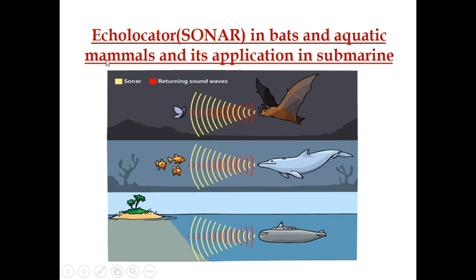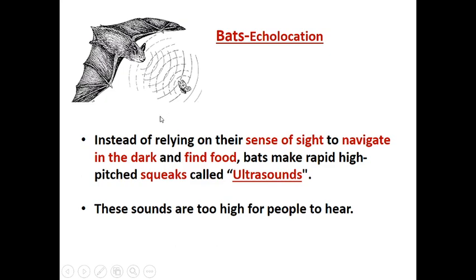In this echolocation concept, you can see a bat identifying a small mosquito not only by sight but through wave patterns. Aquatic fish also detect small fishes, either as food or through communication, via sound waves. The realistic application of this phenomenon is the submarine, which sends signals to the shore or nearest object, enabling communication. All these things can be correlated.